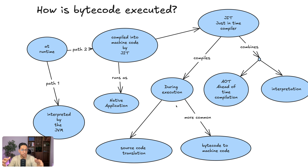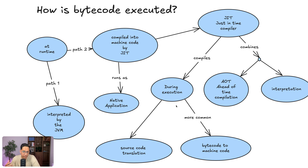The just-in-time compiler combines the power of ahead-of-time compilation and interpretation, and it's really powerful. We'll definitely talk more about JIT compiler and the different available options. During execution, it can compile bytecode to machine code, or it can also support source code translation directly — though compiling from bytecode to machine code is the more common use case. This is just a general flow: how source code gets compiled to bytecode, then compiled into machine code or interpreted directly at runtime, and what benefits JIT brings.